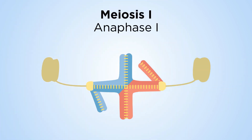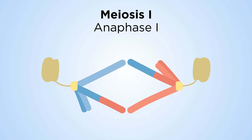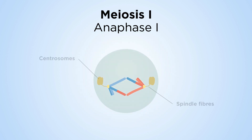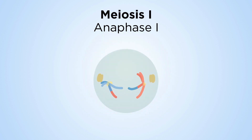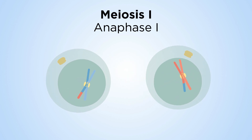In anaphase I, cohesion between sister chromatid arms is gradually released, but cohesion between the centromeres of sister chromatids is maintained. As a result, pairs of sister chromatids separate from one another and move to each spindle pole.